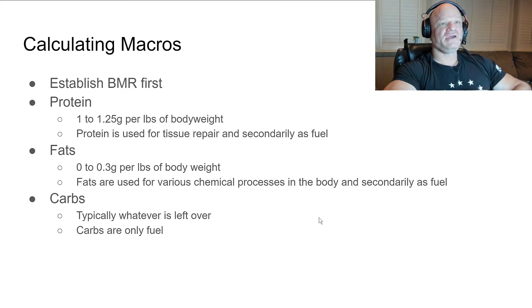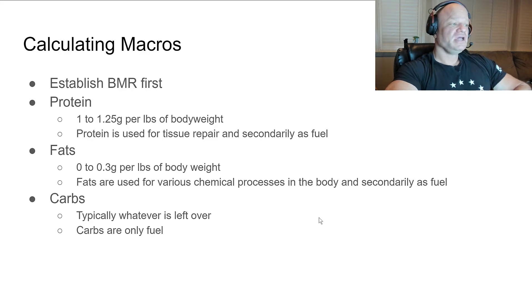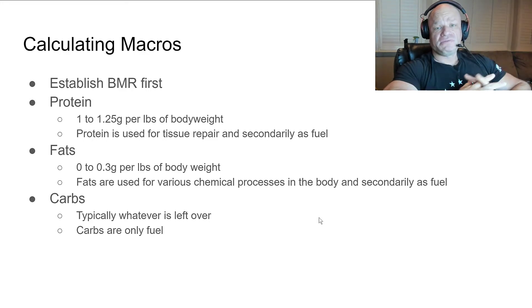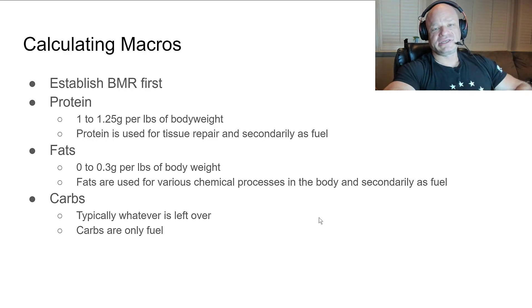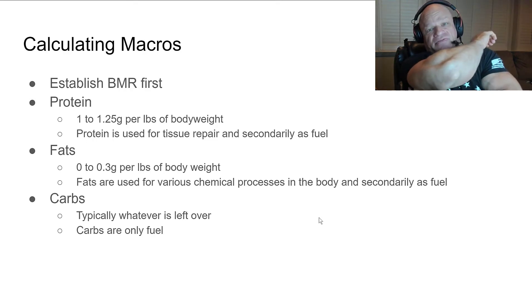Carbs — typically whatever calories are left over after you calculate out your other macros go into the carb column. Carbs are only used as fuel. There are no essential carbs. Your body has to have protein — there are essential amino acids — and you will eventually die without it. Same with fats — your body can't complete chemical processes or manufacture hormones without them. You will not die if you don't eat carbs, but keep this in mind: carbs are the body's preferred fuel source for weightlifting, so if you want to optimize bodybuilding or strength training performance, carbs are key.